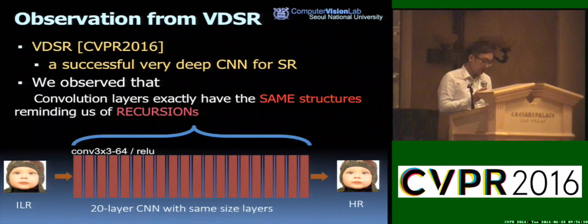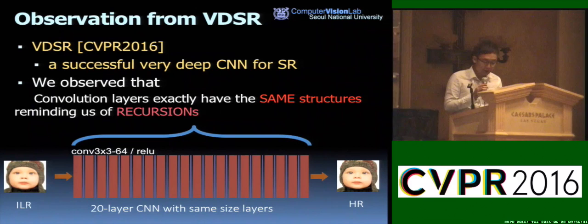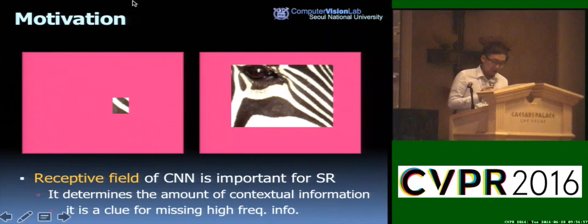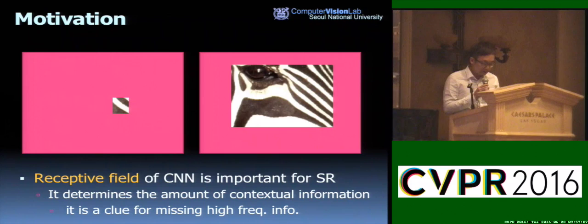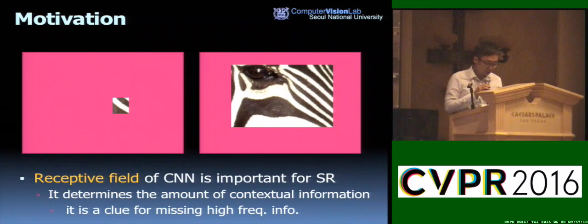This work actually starts from another work, VDSR. After we trained the VDSR, we observed that some internal layers look similar — they have the same size and the same number of filters by design, and the pattern of activation was also similar between layers. The effect reminds us of recursion. We thought recursion could be very effective and efficient for the super-resolution problem. In SR, the receptive field size of the neural network is very important, because it determines the amount of contextual information, which is a very important clue for missing high-frequency information.